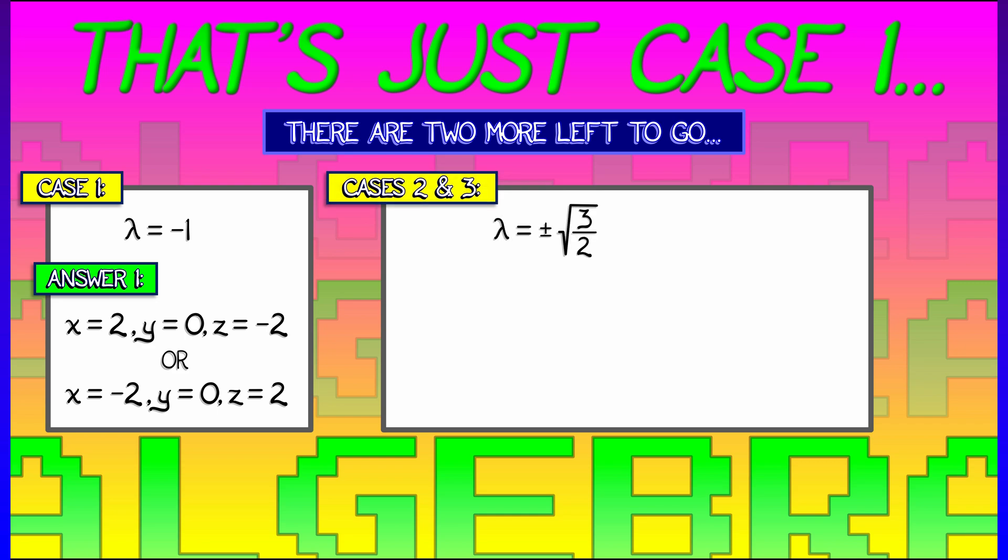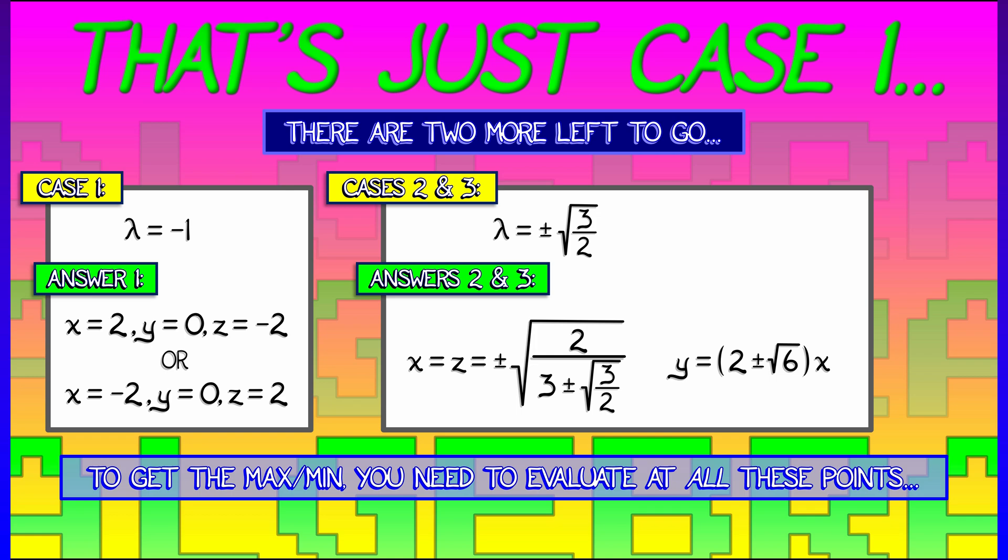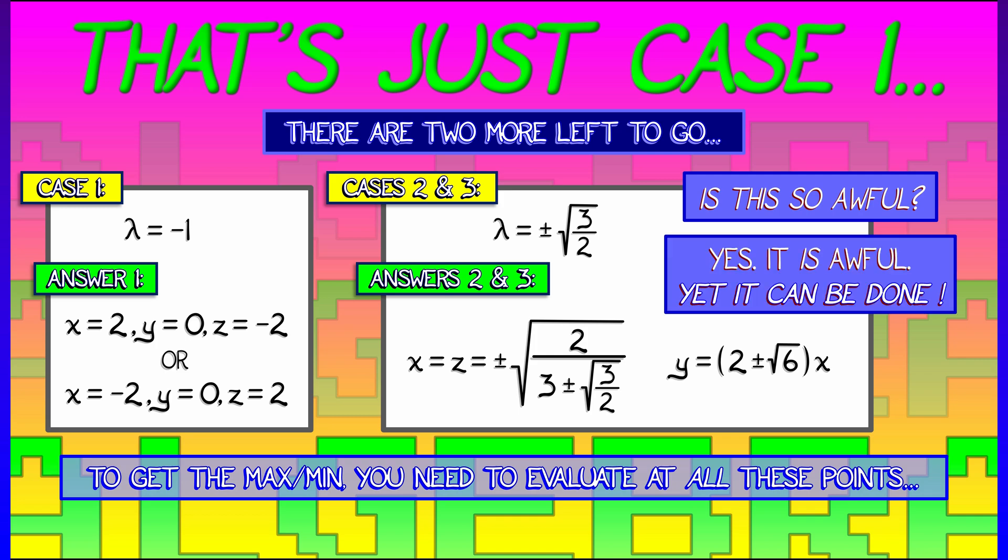We have to look at what happens when λ = ±√(3/2). This is algebra. And we're not going to do this here. No. Why? Because in this case, x and z are ±√(2/(3 ± √(3/2))), and y is quantity (2 ± √6) times x. Now, that's not much fun. In fact, it's really kind of awful, because we have to substitute all these back into the function to figure out what are the maxes, what are the mins. Oh, that's pretty bad. But it is a thing that can be done. Lagrange's method is automatic. You can do it if you can do the algebra.